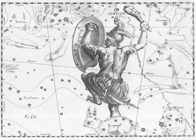The earliest evidence for humankind's identification of constellations comes from Mesopotamian inscribed stones and clay writing tablets that date back to 3000 BC. It seems that the bulk of the Mesopotamian constellations were created within a relatively short interval from around 1300 to 1000 BC. Mesopotamian constellations appeared later in many of the classical Greek constellations. The oldest Babylonian star catalogues date back to the beginning of the Middle Bronze Age, most notably the Three Stars Each texts and the MUL.APIN, an expanded and revised version based on more accurate observation from around 1000 BC.